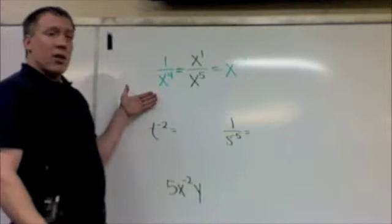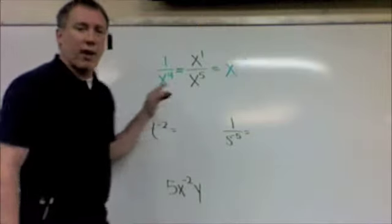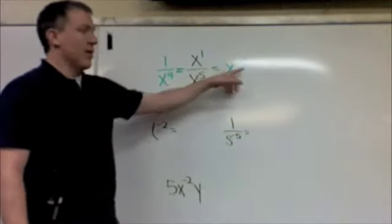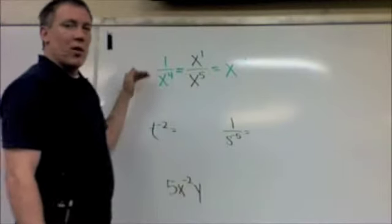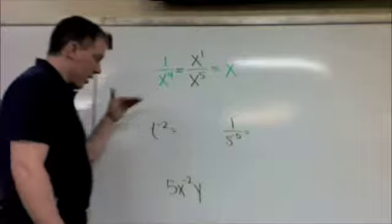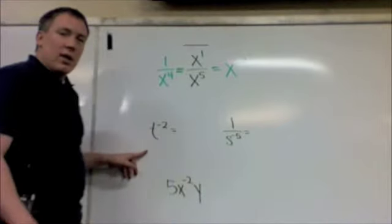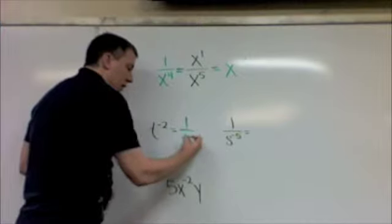Now, if we take a look at this, the negative exponent only indicates that it's a fraction. These are equivalent statements. x to the negative four is the same as one over x to the positive four. Likewise, t to the negative two is the same as one over t to the positive two.